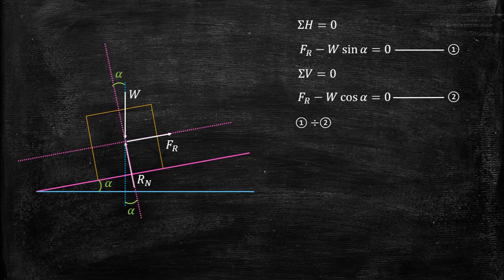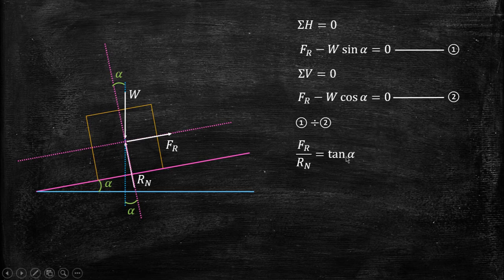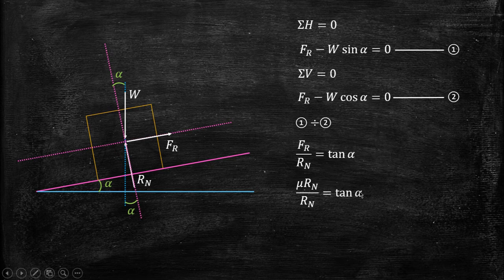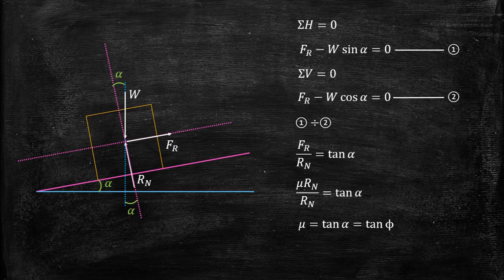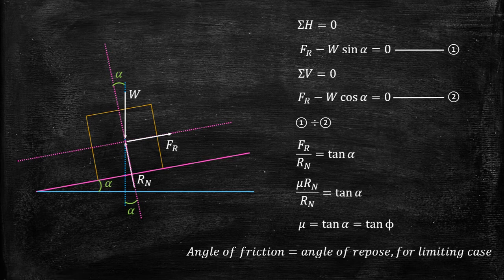Dividing equation 1 by equation 2: Fr divided by Rn equals tan alpha. Since Fr equals mu times Rn, Rn cancels, giving mu equals tan alpha. Also from angle of friction, mu equals tan phi. Therefore tan alpha equals tan phi, meaning the angle of repose alpha equals the angle of friction phi at the limiting case. So the angle of repose equals the angle of friction.